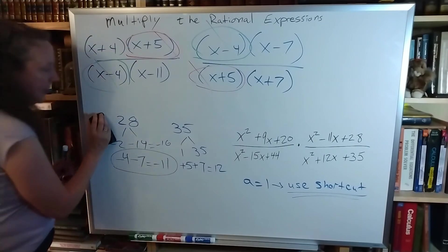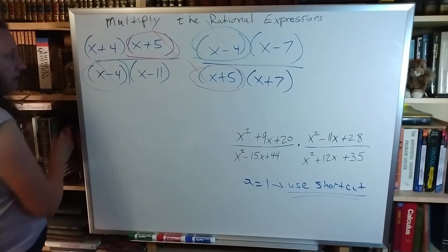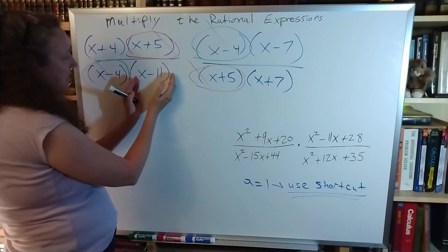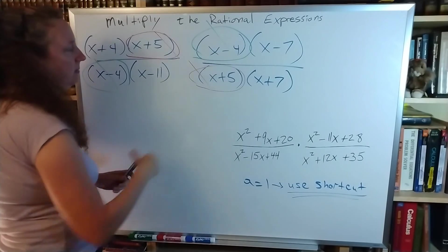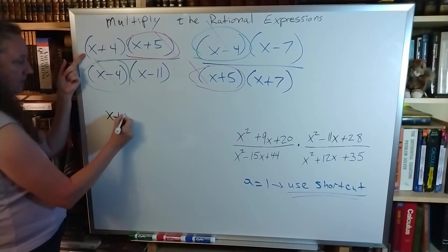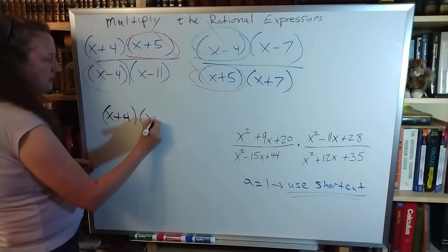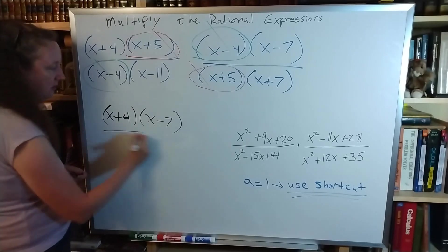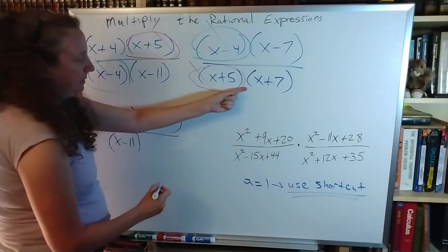Now it's time to write down my answer. Feel free to double check. We have the x minus 11 here. Double check. Nope. x plus 7. Double check. Nope. Okay. So we stick with the x plus 4 times the x minus 7 over x minus 11 times x plus 7.